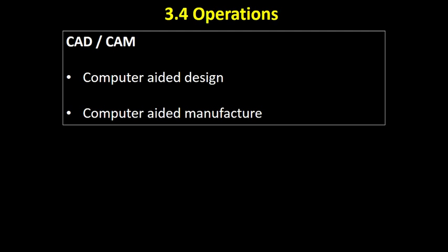CAD — computer aided design — involves designing things on computers. You're able to manipulate the design a lot better and look at it from all different angles. CAD can be very useful in the process of designing, certainly an advance from old hand drawings. Computer aided manufacture (CAM) refers to the robotics we've already talked about.